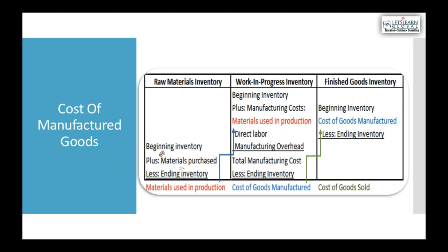Material used in production plus manufacturing expenses (factory expenses and labor) gives manufacturing cost. Adding beginning and ending finished goods adjustments gives cost of goods manufactured, and then adjusting for finished goods gives cost of goods sold. This will be discussed in detail in the cost accounting topic; for now we concentrate on cost of goods purchased.